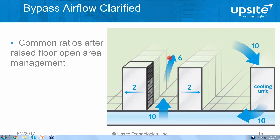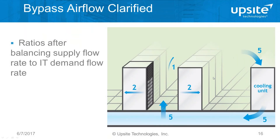The amount of air moving through the IT equipment is independent of the amount of air moving through the cooling units — they're totally separate. For the most part, the amount of air moving through both is fairly consistent. There are some variations as equipment ramps up and ramps down, but in a fairly large room those tend to level out and there's a fairly consistent demand from the IT equipment.